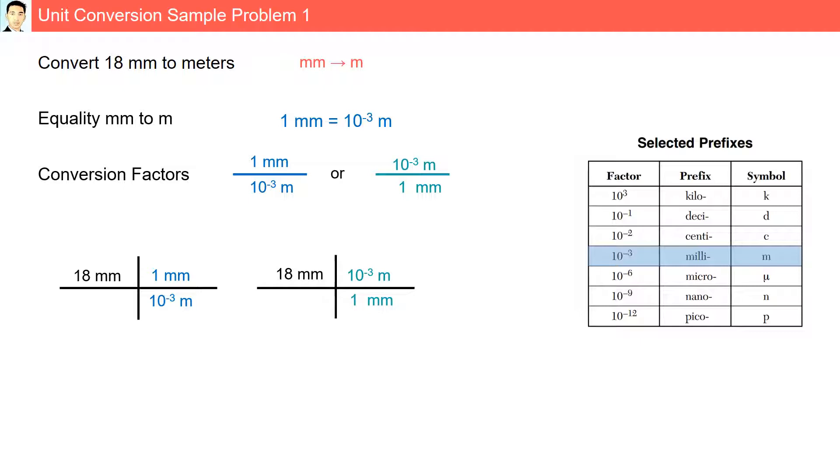If we use the other conversion factor, the millimeters cancel. The resulting answer is 18 times 10 to the minus 3rd or 0.018 meters. Note, choose the conversion factor with the unit you are converting to into the numerator.